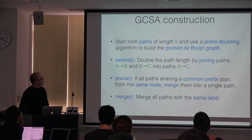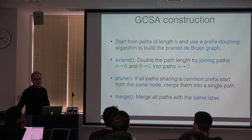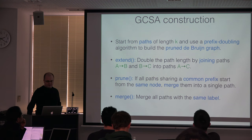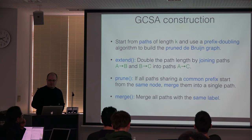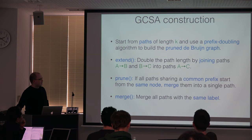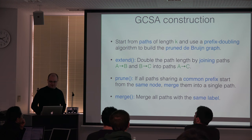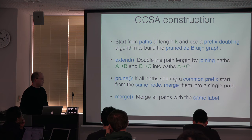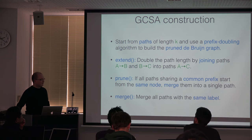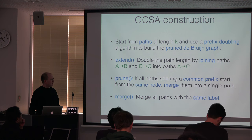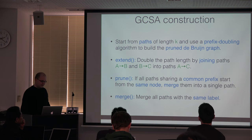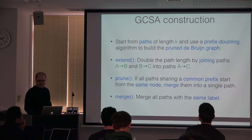To build the index, we start from paths of length K and use a prefix-doubling algorithm — the original suffix array construction algorithm — on the pruned de Bruijn graph. There are three kinds of steps: Extend, where paths of length K are joined into paths of length 2K; Prune, after each extend step, where paths sharing a common prefix that all start from the same node in the original graph are merged into a single node of the pruned de Bruijn graph; and Merge, which makes all paths with the same label into a single node.